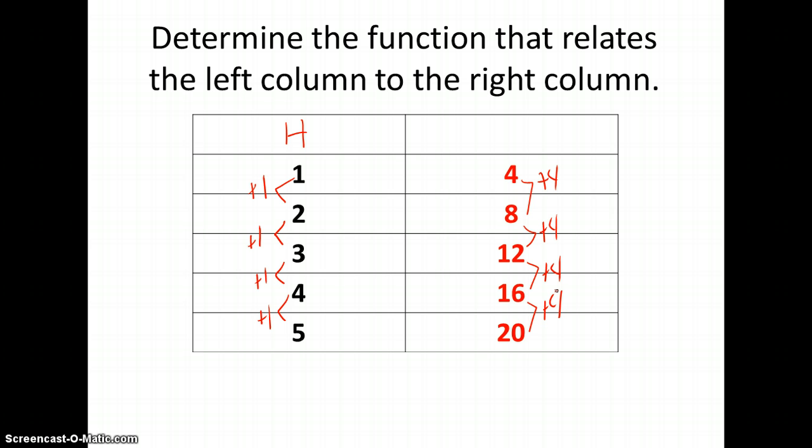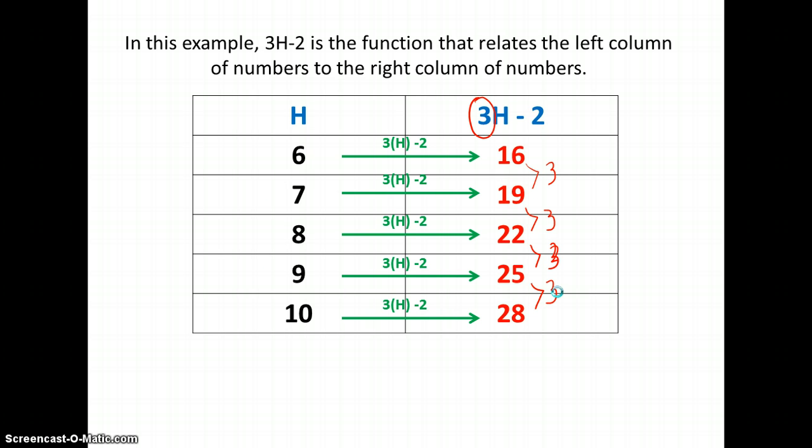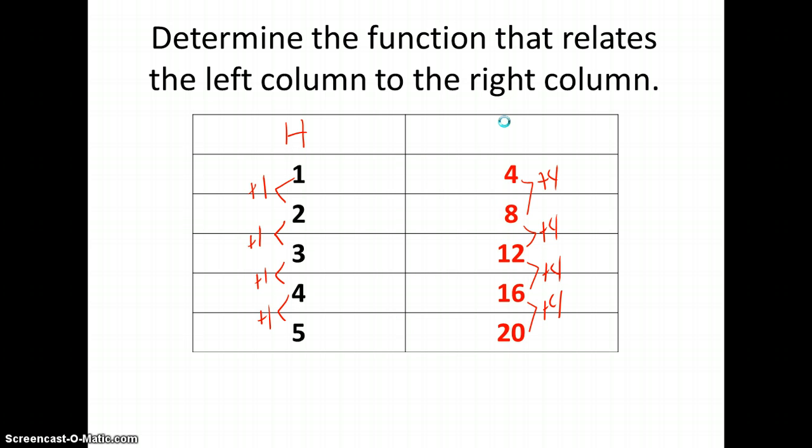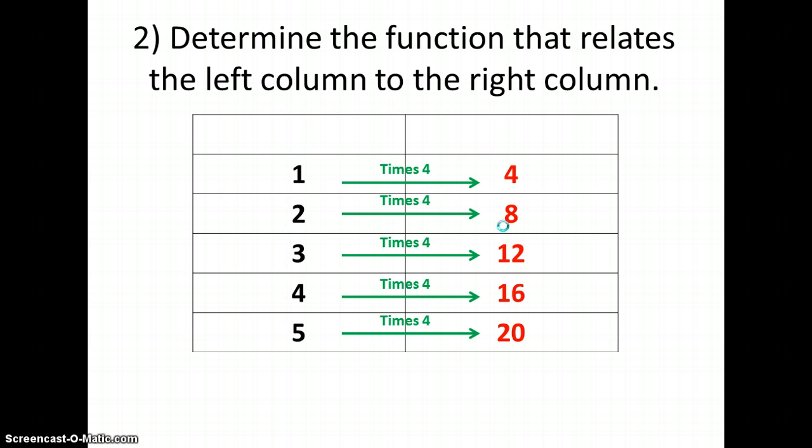Now, remember in the last problem, when I was increasing by 3 each time, the 3 came right before my variable. So now, when I am increasing by 4 each time, I know my 4 is going to come right before my variable. And if I look, 1 times 4 is 4, 2 times 4 is 8, 3 times 4 is 12, 4 times 4 is 16, and 5 times 4 is 20.